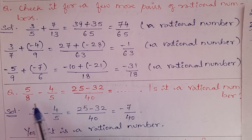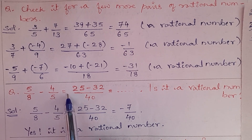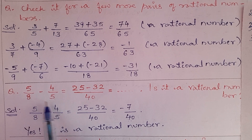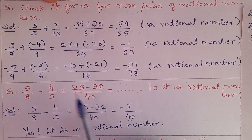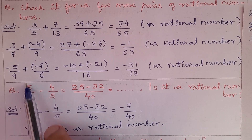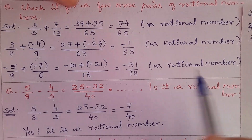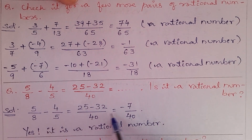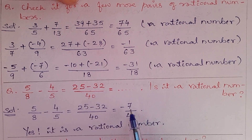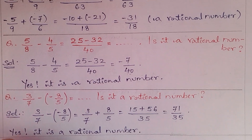Next: 5/8 − 4/5. Take the LCM of 8 and 5, which is 40. Using the butterfly method: 5 × 5 = 25, and 8 × 4 = 32. So 25 − 32 = −7. The answer is −7/40. Yes, it is a rational number.